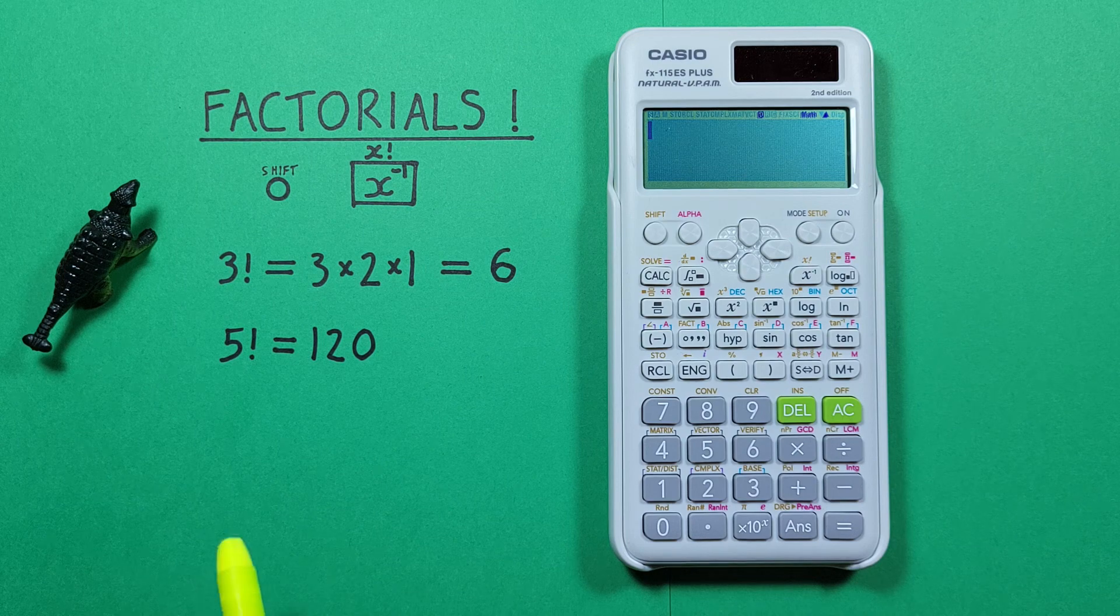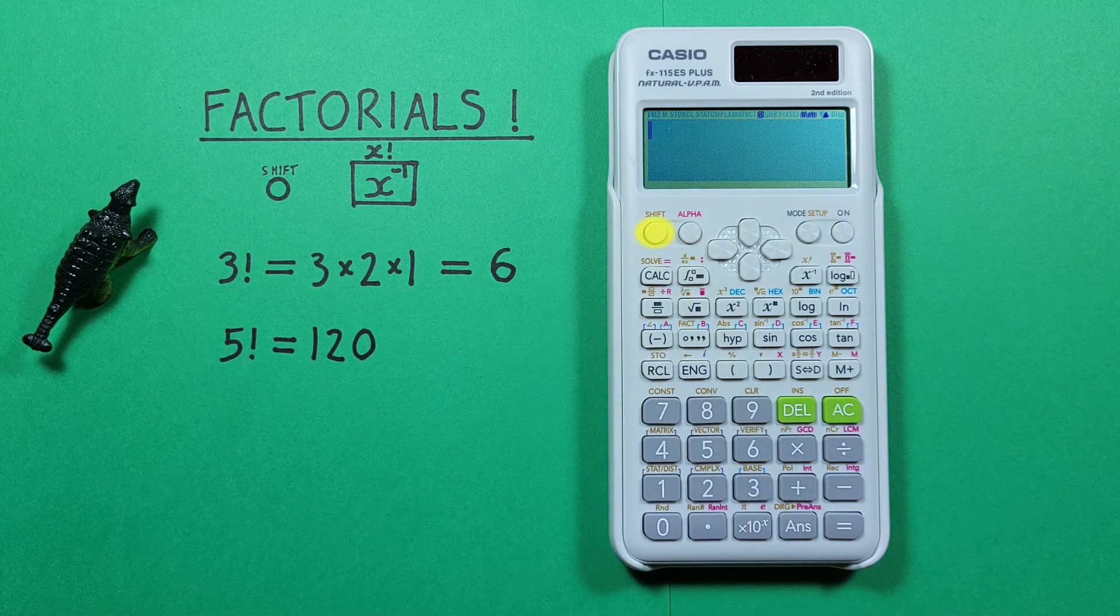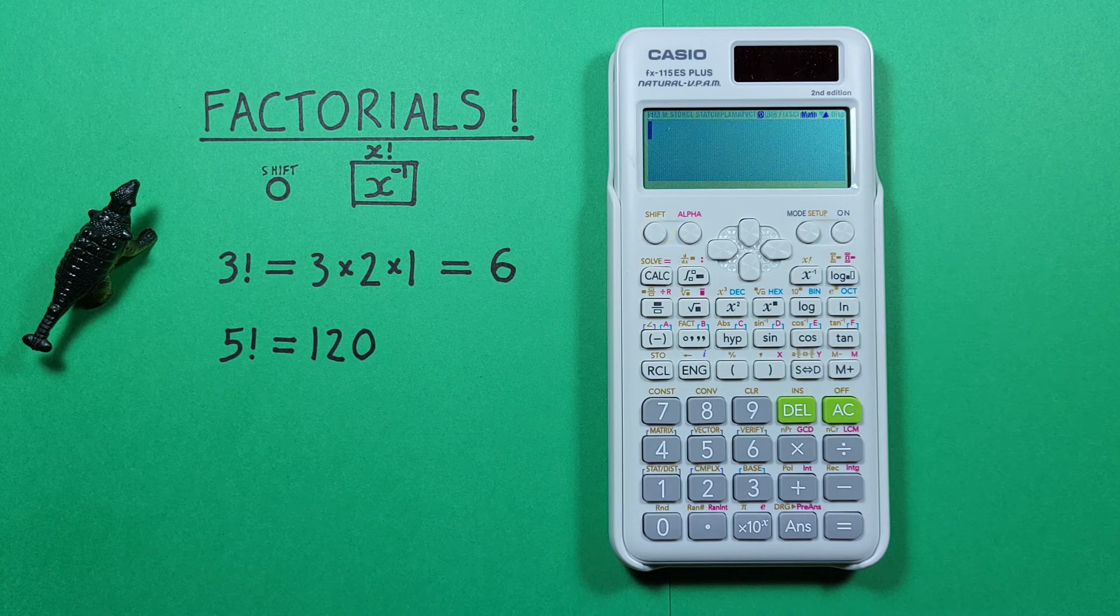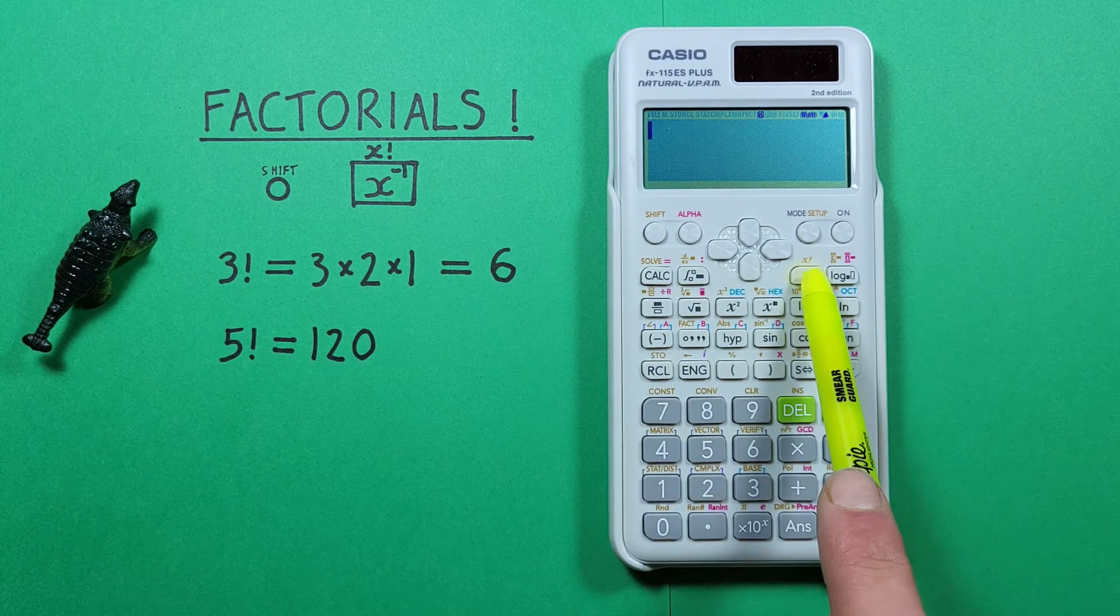To do that we need to use the shift key that looks like this located here and the inverse key with the shift function of factorial that looks like this located here.